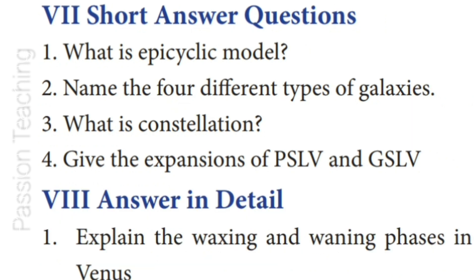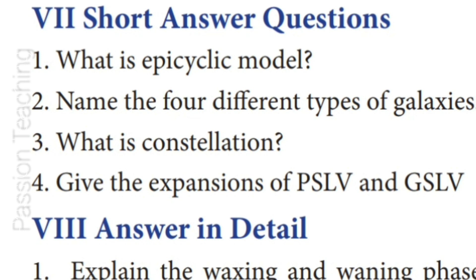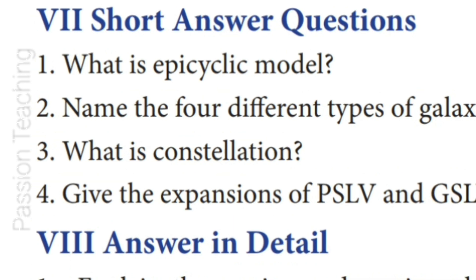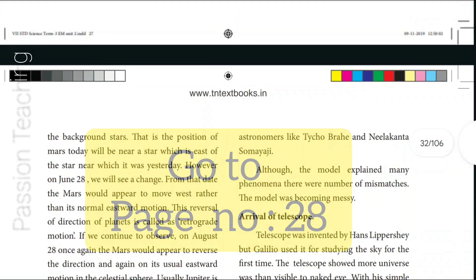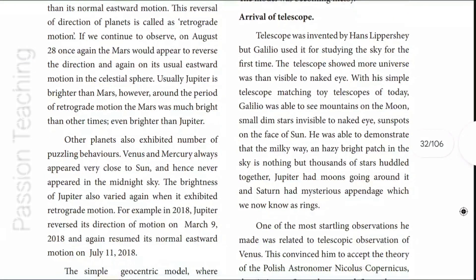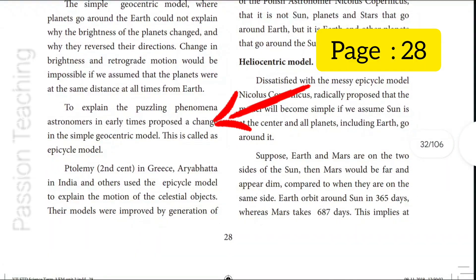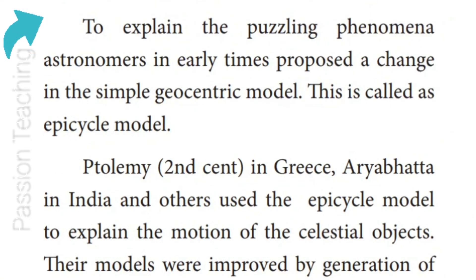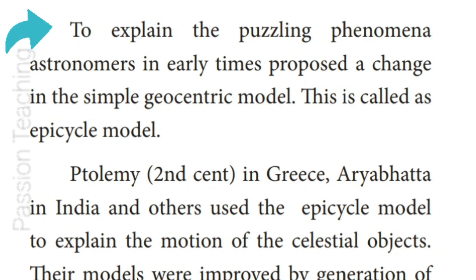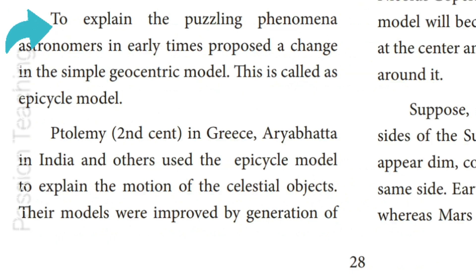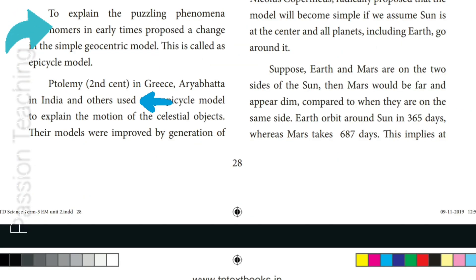Seventh Roman Letter: Short Answer Questions. Question 1: What is the Epicyclic Model? Answer from page 28, fourth paragraph: To explain the puzzling phenomena, astronomers in early times proposed a change in the simple geocentric model. This is called the Epicycle Model.